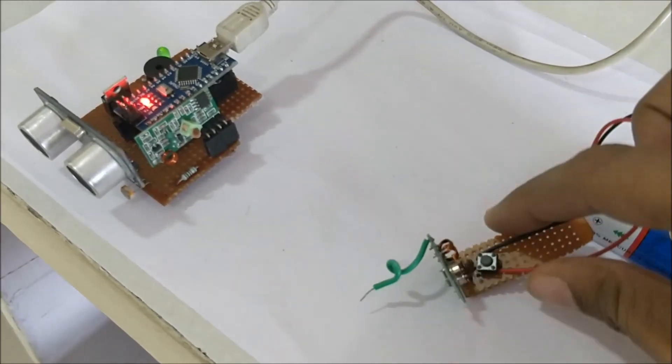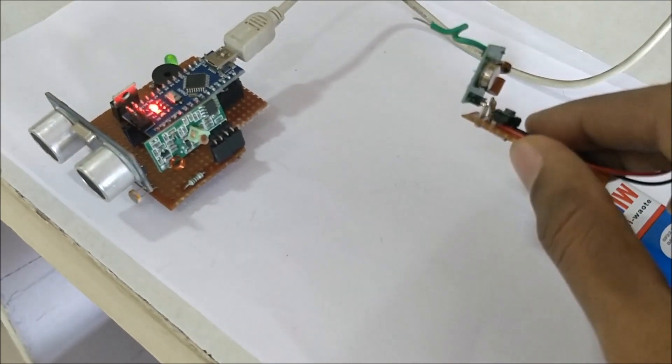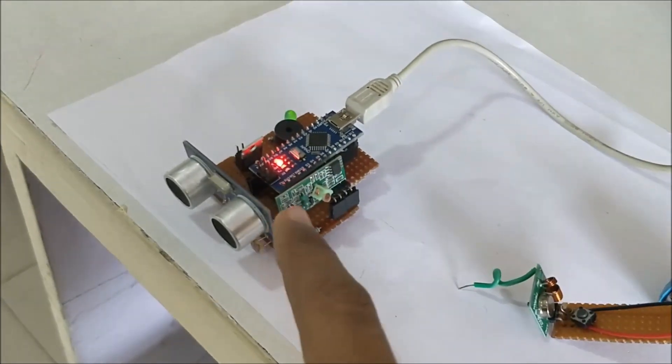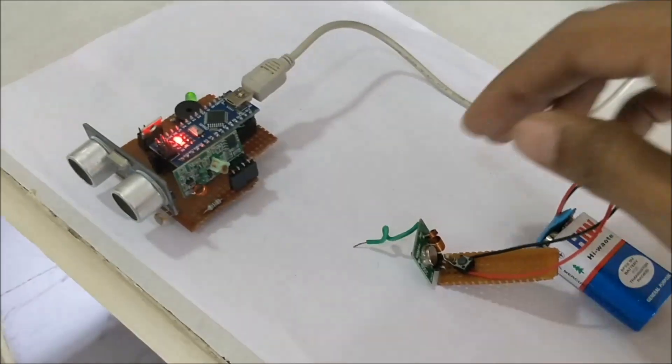We have the remote control which is nothing but an RF transmitter along with a button. Whenever I press this button, the Arduino will be able to receive it using this receiver and you can hear a beep.